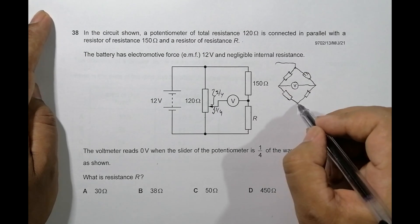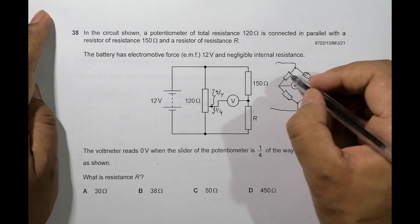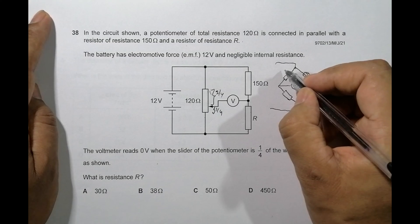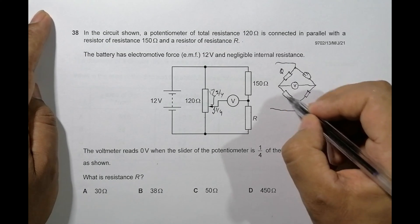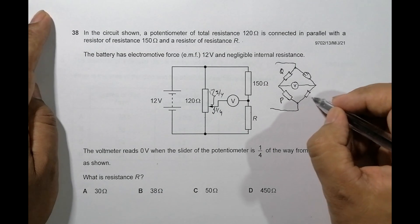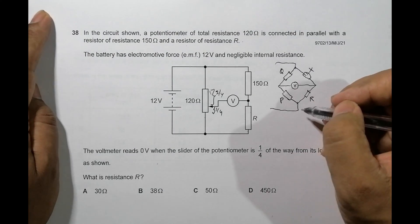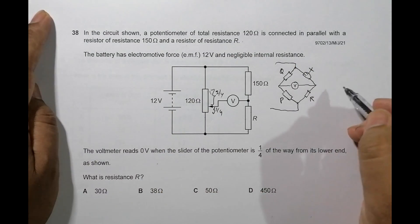So this is a Wheatstone bridge circuit. This resistance is this one which we call as Q, this is P, this is R, and this is X. If this thing is balanced then I must have P by Q is equal to R by X.